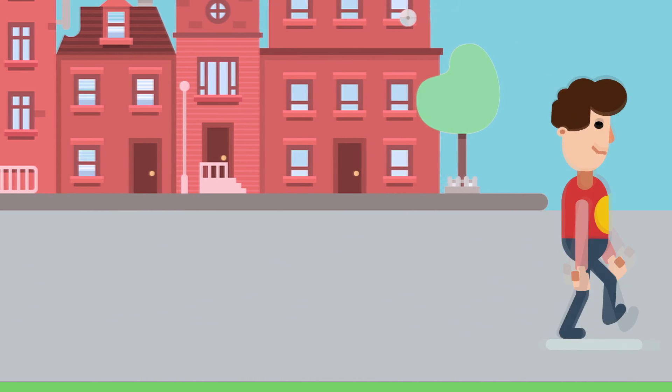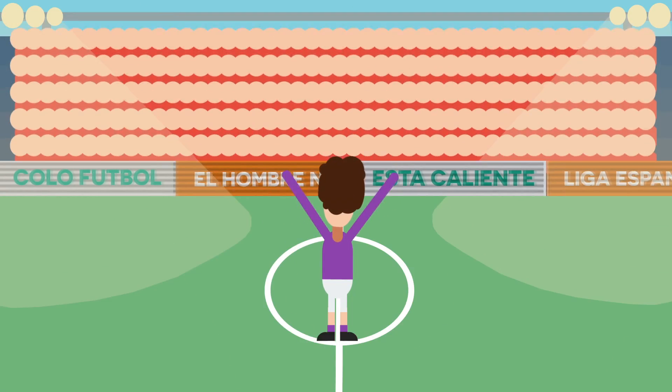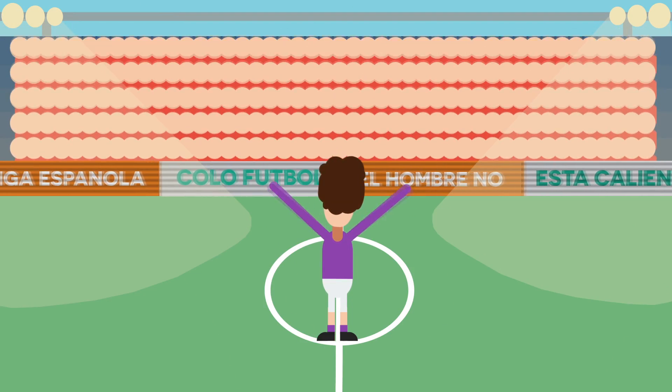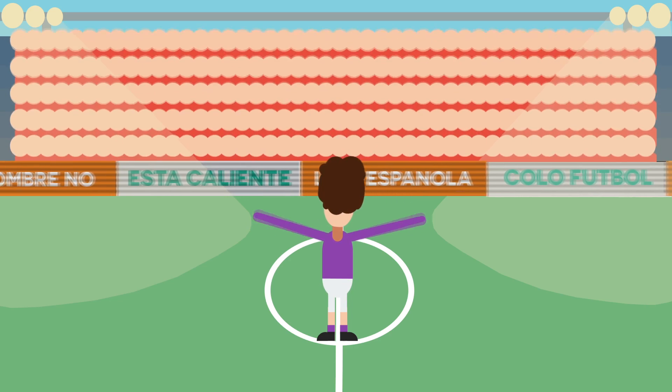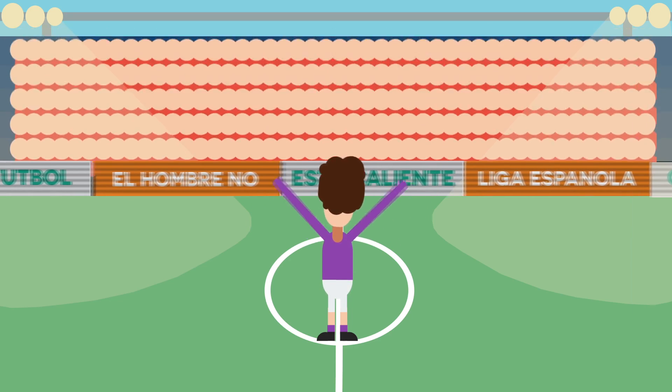This is Bob. Bob dreams of being a world-renowned soccer player. He wants to play in the biggest leagues and in the biggest games, but there's a major issue stopping him from attaining this goal, and that's his rare and severe case of hemophilia.